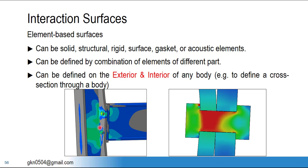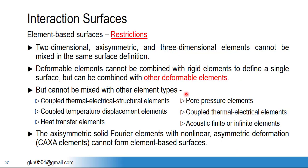Interaction surfaces can be defined at the exterior or interior of a body. Exterior means directly on the surface; interior means a surface passing through the component — for example, passing through the middle of a bolt to check results in that area or define output requests there. An interior surface can be used as an output reference, and you can also get this via section view in post-processing.